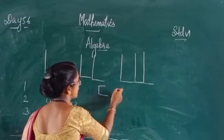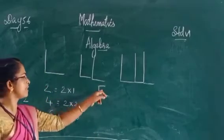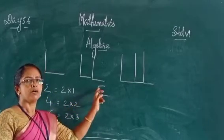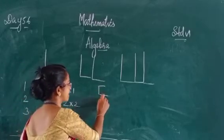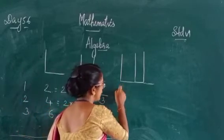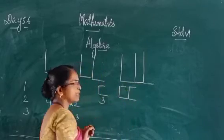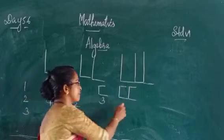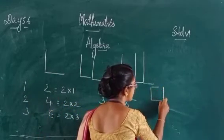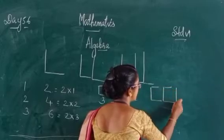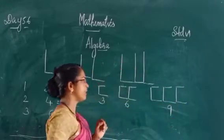For example, English alphabet C. How many matchsticks do you need to form one C? Three matchsticks. For forming two C's, how many matchsticks? Six. For forming three C's, how many matchsticks? Three plus three plus three — that is nine.